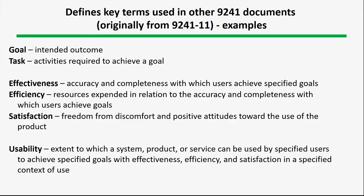The definition of usability in this document is: the extent to which a product, system, or service can be used by specified users to achieve specified goals, with effectiveness, efficiency, and satisfaction in a specified context of use. The term 'context of use' is important because there are documents that relate to it.